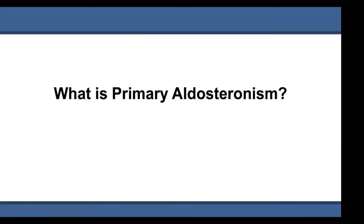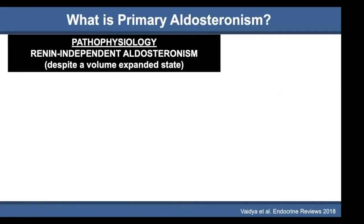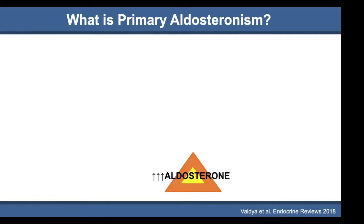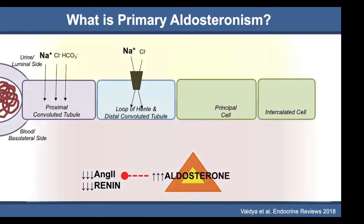What is primary aldosteronism? It is a pathophysiologic form of renin-independent aldosterone production that occurs despite volume expansion and hypokalemia. One or multiple foci in the adrenal gland autonomously produce aldosterone. The plasma volume gets expanded, and the juxtaglomerular cells appropriately suppress renin and angiotensin 2. Here's a picture of a nephron — the glomerulus and the kidney cartoon — to illustrate how this works.